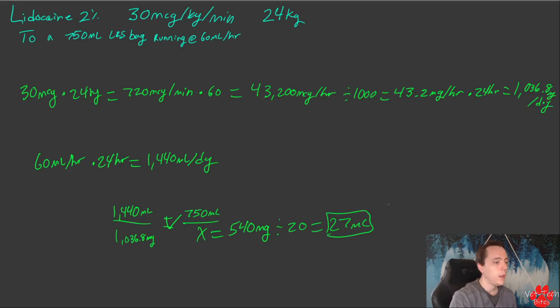That's it. We need to add 27 ml of lidocaine to 750 ml of LRS running at 60 ml per hour for our patient to get 30 mg per kg per minute of lidocaine. Next time your doctor signs it up and everybody's going 'oh my god, what am I going to do?'—you got it, no worries. It's really that easy. You just find out how much drug they need per day, how much fluids they need per day, and then do a proportion to figure out what that would be for whatever you're looking for. Every time.